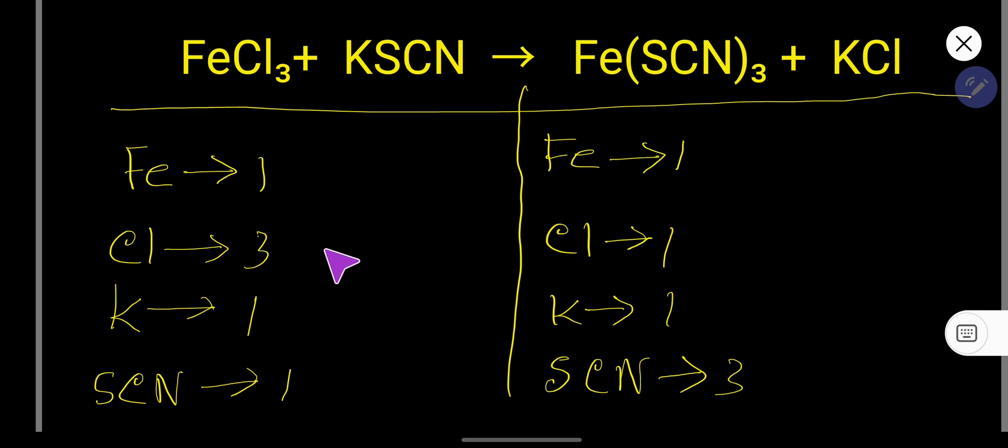Iron 1, 1, so iron is balanced. Chlorine here 3, here 1, so chlorine is not balanced.